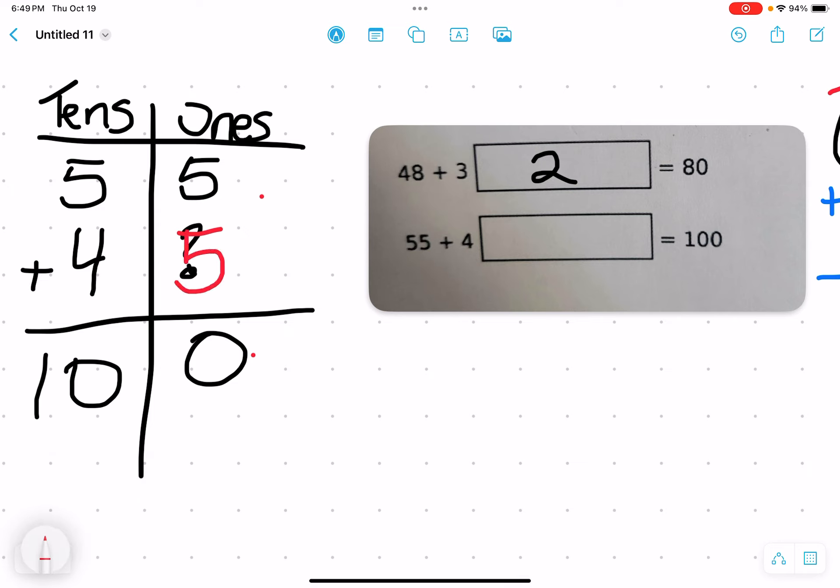So if I put 5 here, I'm going to say, is this equation true? Let's test it out. 5 plus 5 is 10, so you made a new 10. Now, in our circle becomes 1 ten plus 5 tens, which are 6 tens. And 6 tens plus 4 tens equal 10 tens, making our missing digit 5.